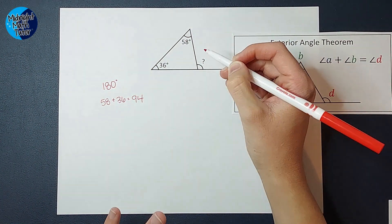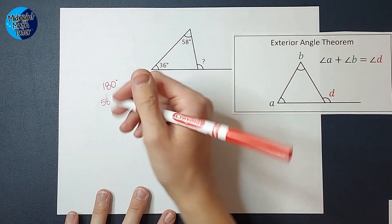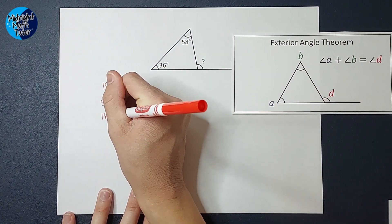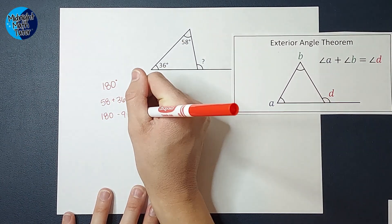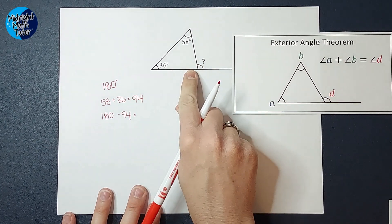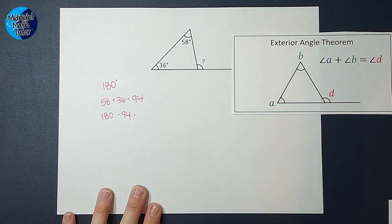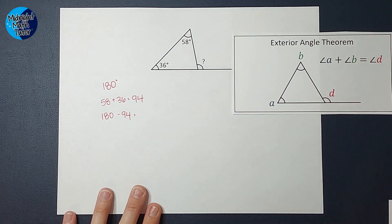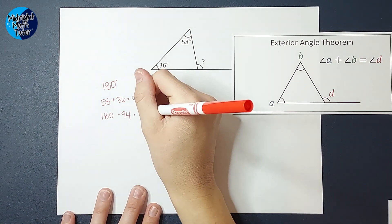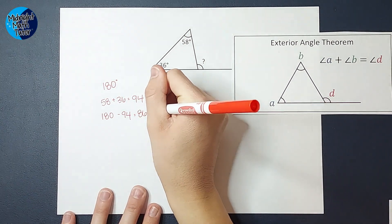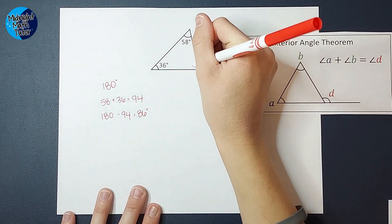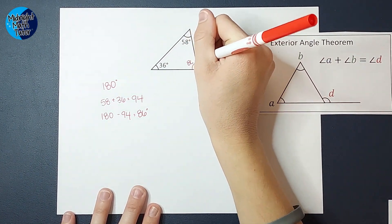So those added together are 94. So this one, I know to be able to add to 180, I'm going to take 180 and subtract 94. And that'll tell me what this guy is. When I do that, I get 86. So this angle right here is 86 degrees.